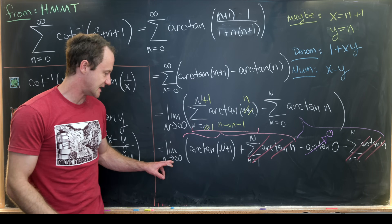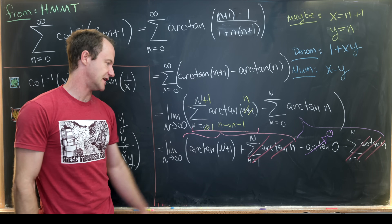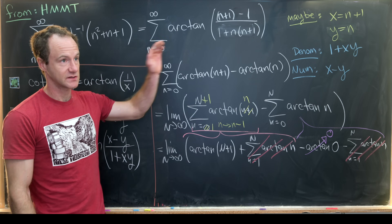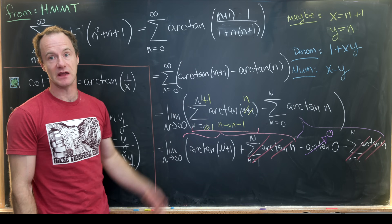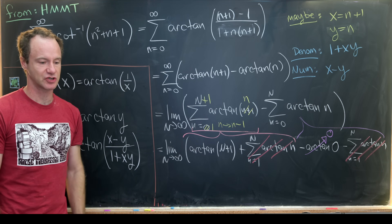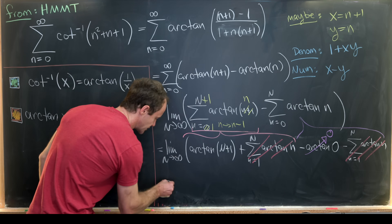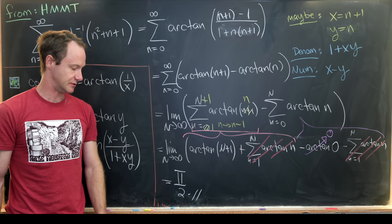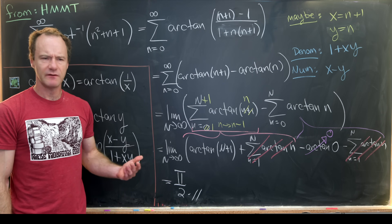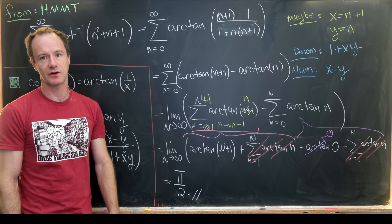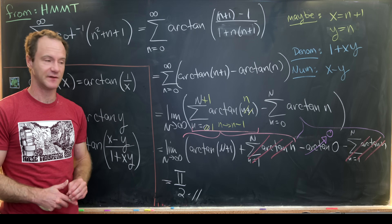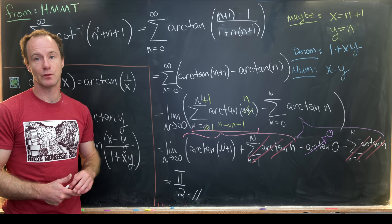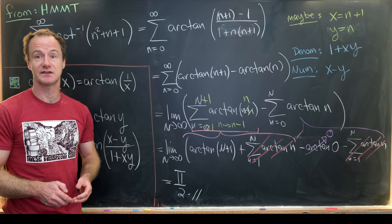The horizontal asymptote to the right for the inverse tangent function is well known to be pi over 2. So that gives us our final value of pi over 2. I've done other problems on the channel where we calculate certain nice infinite sums, so there should be one on the screen right now if you want to check it out.